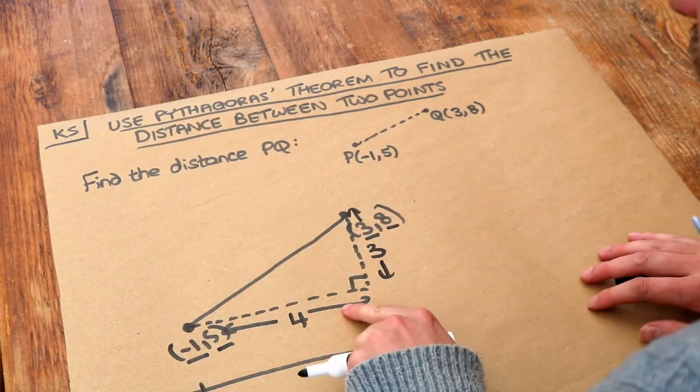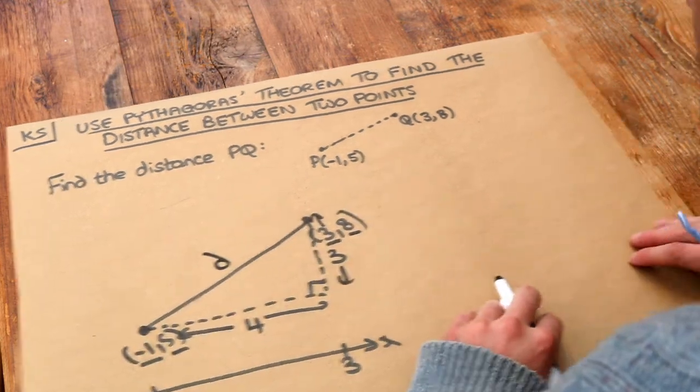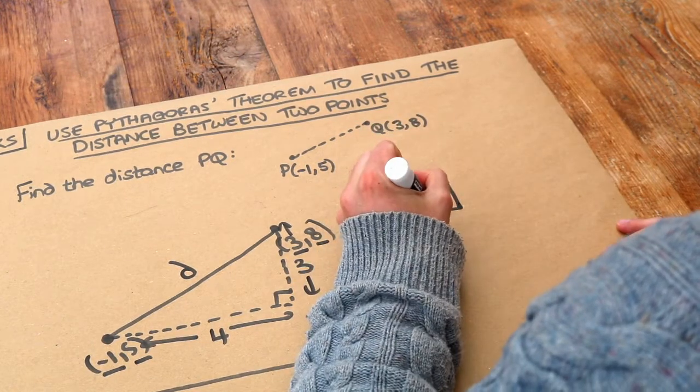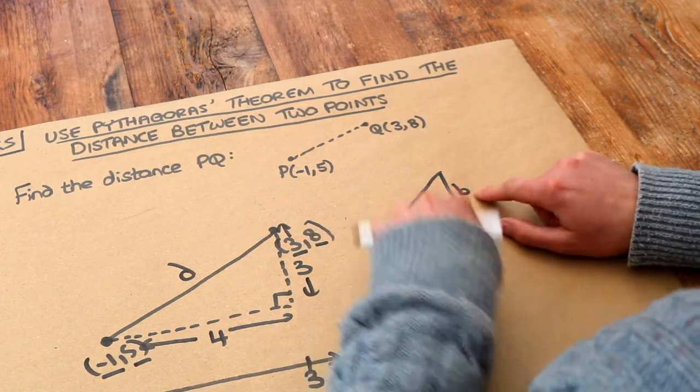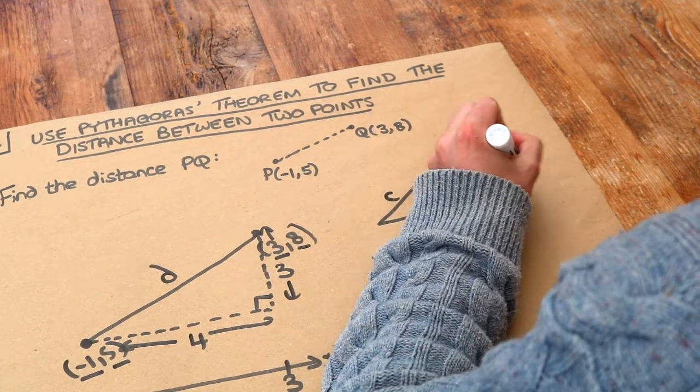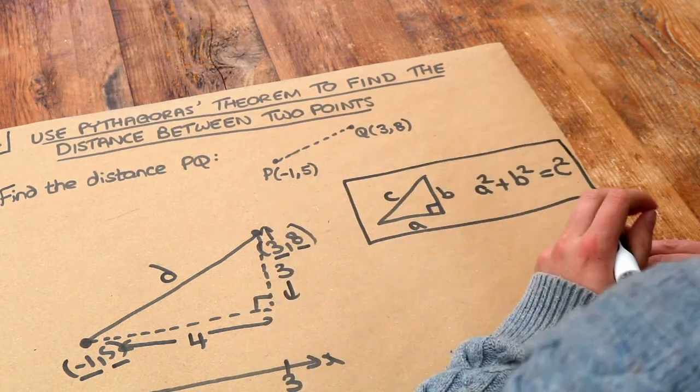And then we can use Pythagoras theorem to find out this side here. So let's call it D for distance. Now Pythagoras, remember, if you have three sides of A, B and C, where A and B are the two shorter lengths either way around and C is the hypotenuse, then A squared plus B squared is equal to C squared. That's Pythagoras theorem, which we previously saw in other videos.